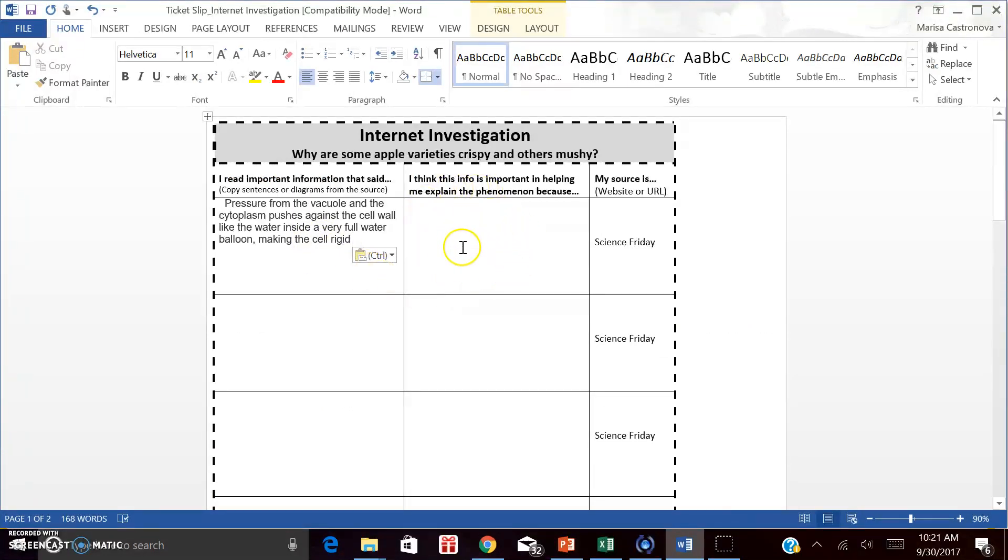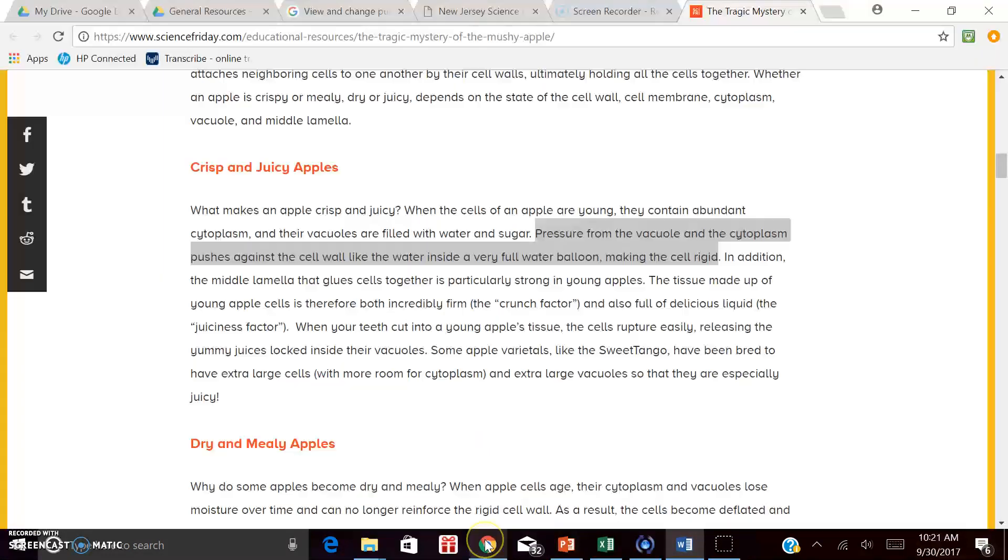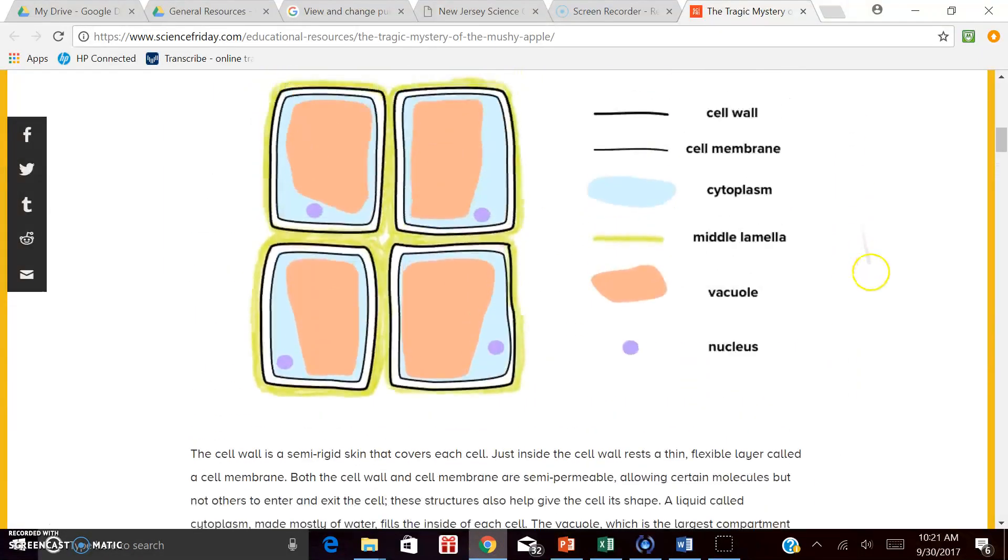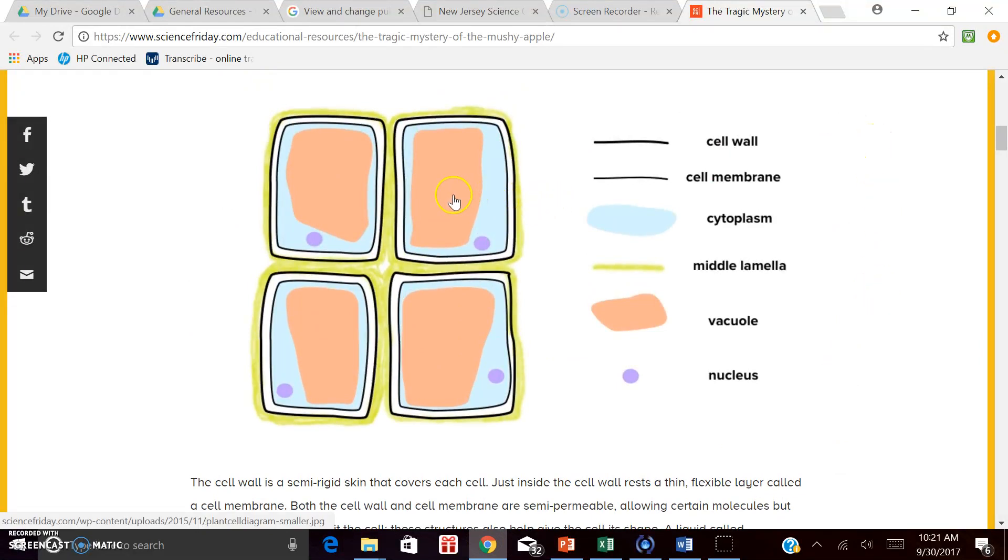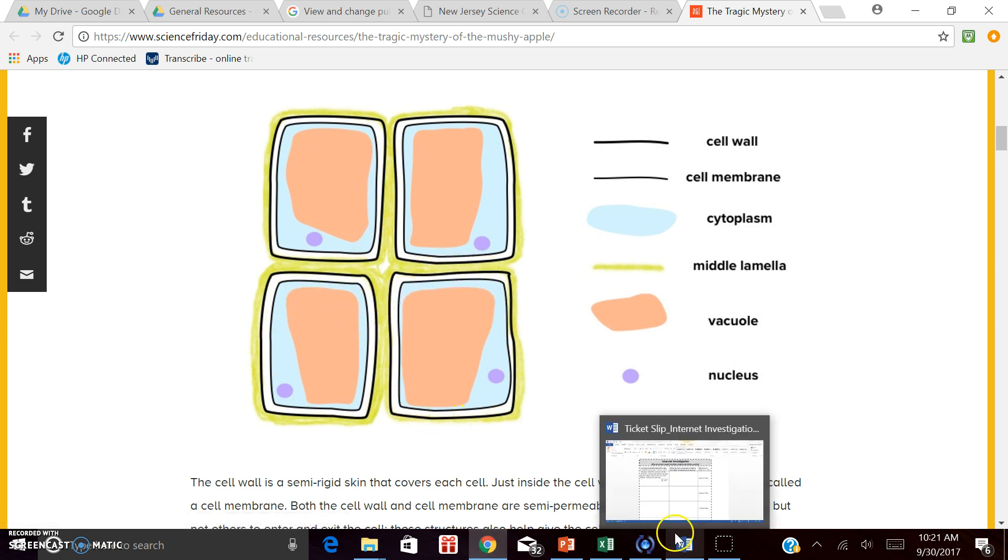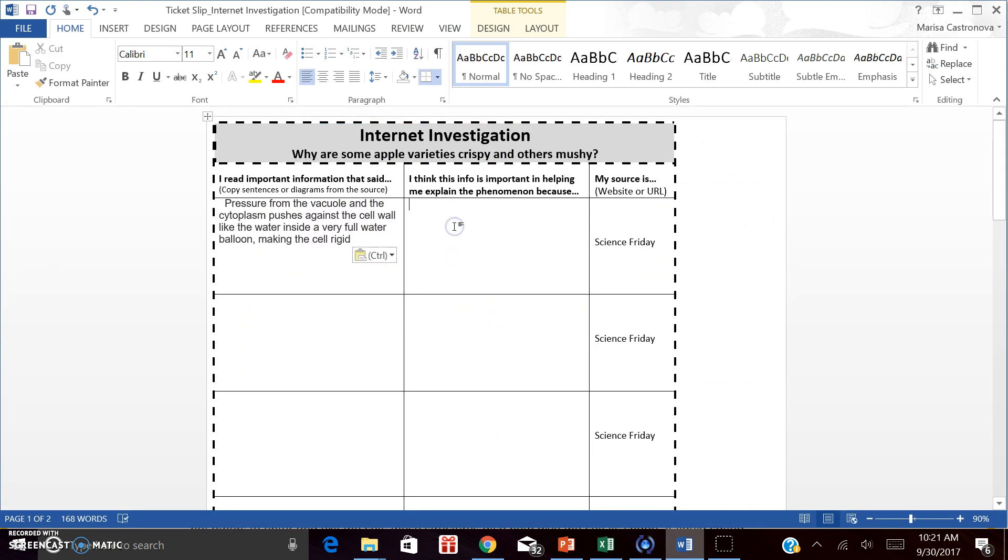Now I need to make sense of it and put it in my own words. Lots of times when I'm trying to make sense of information, I'll go back and look at pictures or diagrams. What that sentence was saying is that when the vacuole becomes really full and there's lots of cytoplasm, the pressure from both of these things pushes against the outer boundaries, making them rigid and stiff. You can imagine that this is occurring in every cell, that all the cells become rigid and stiff. And this leads to the entire apple being crisp. So when I go back to my ticket slip, I probably can boil this down by saying that full vacuoles and lots of cytoplasm equals crispy apples.